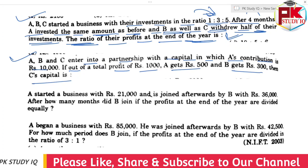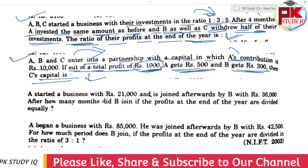ABC entered into a partnership. A's contribution is Rs. 10,000. Out of a total profit of Rs. 1,000, A gets Rs. 500 and B gets Rs. 300. Then C gets Rs. 200. Find C's capital. This is a simple question.